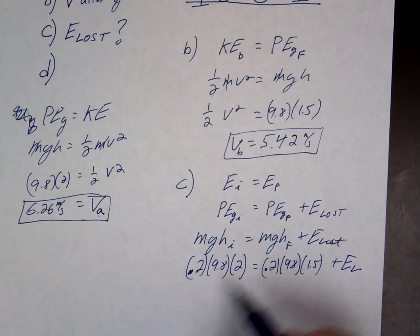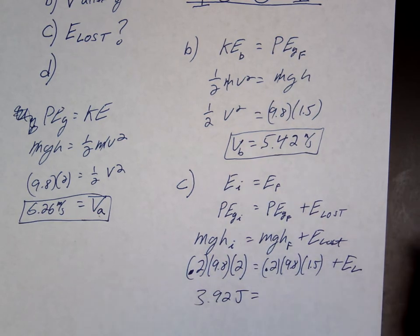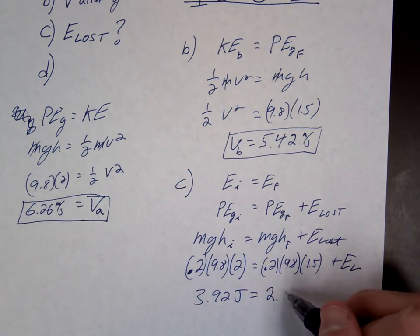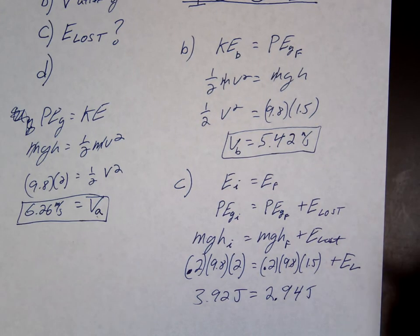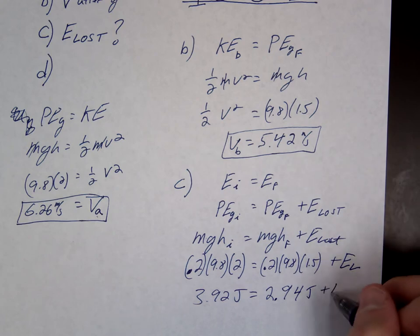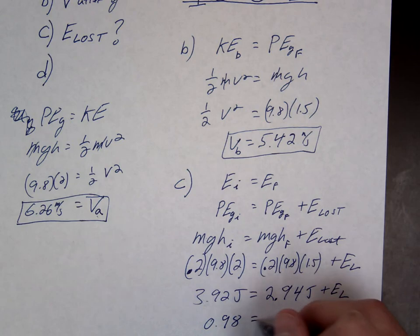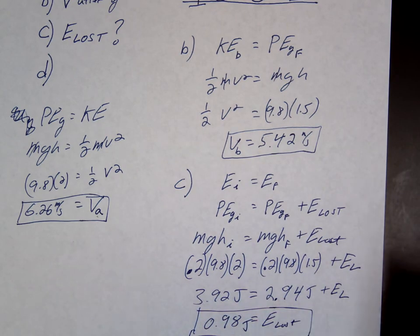What was our starting energy? What was our ending energy? 9.4? Yeah. So it looks like we lost almost exactly one joule. So it's at 98.